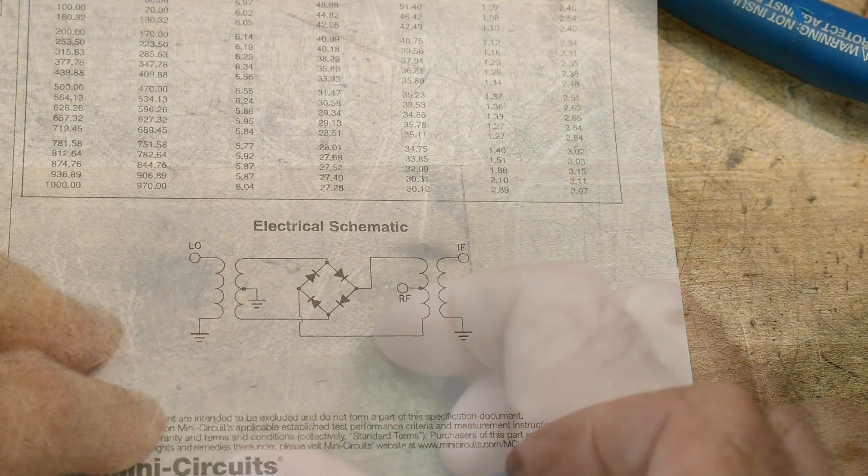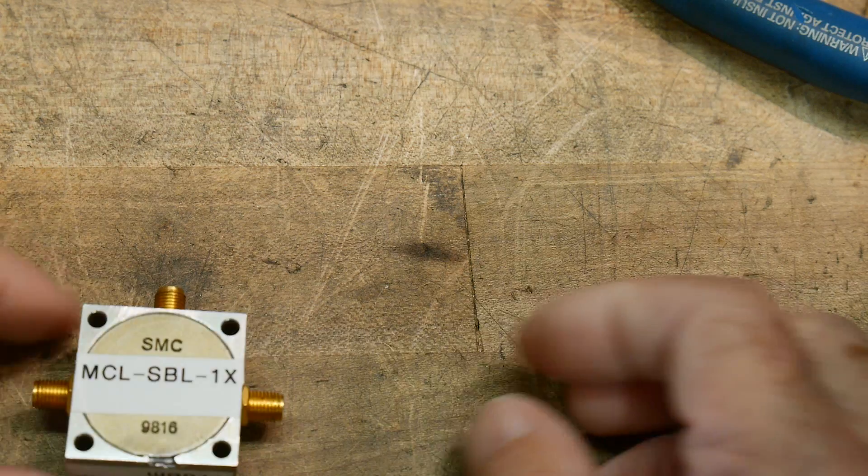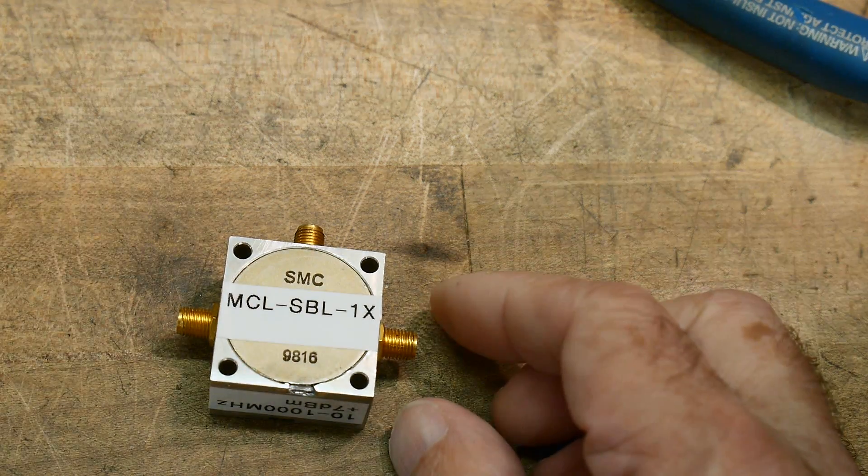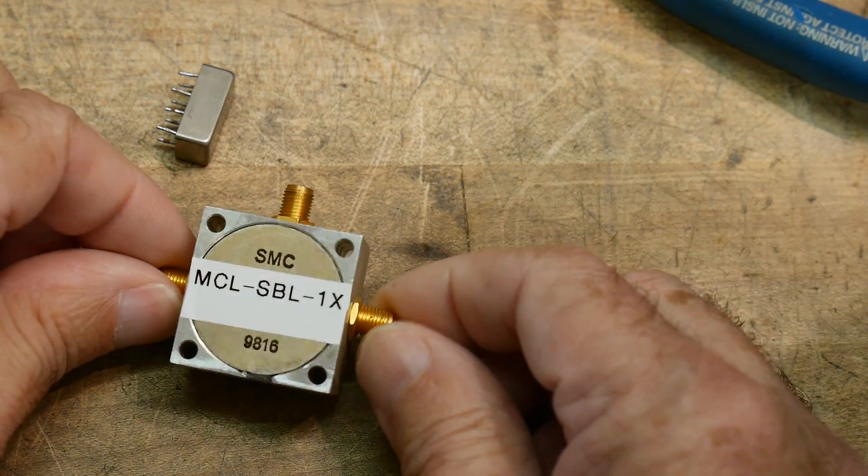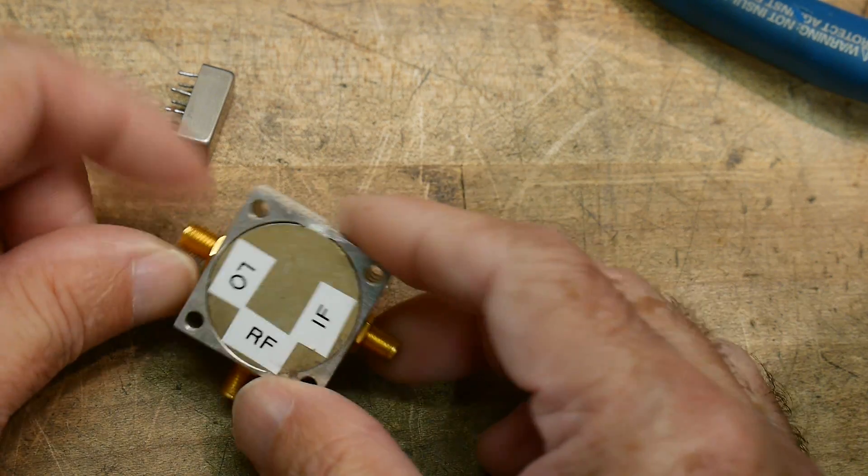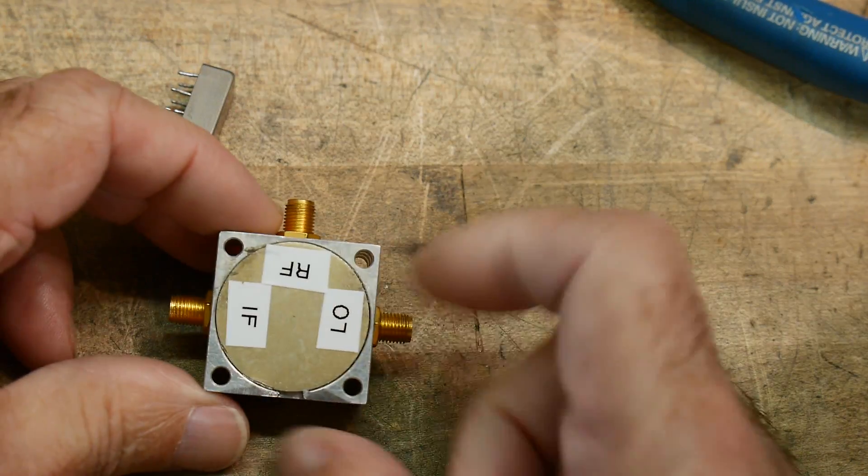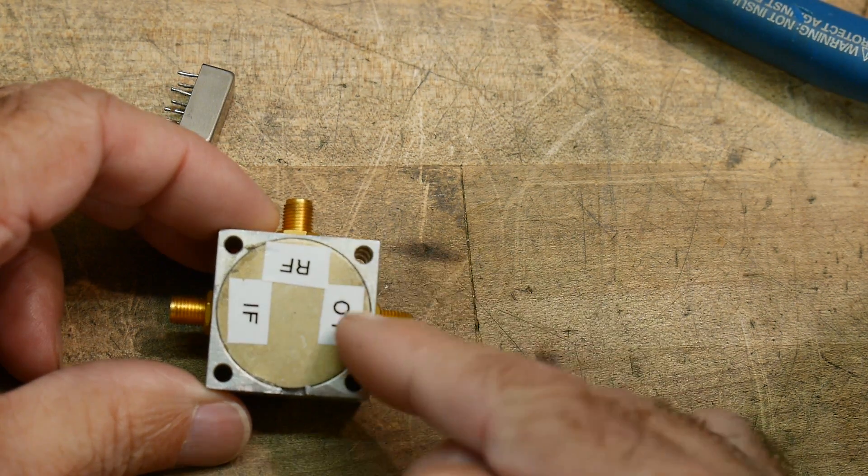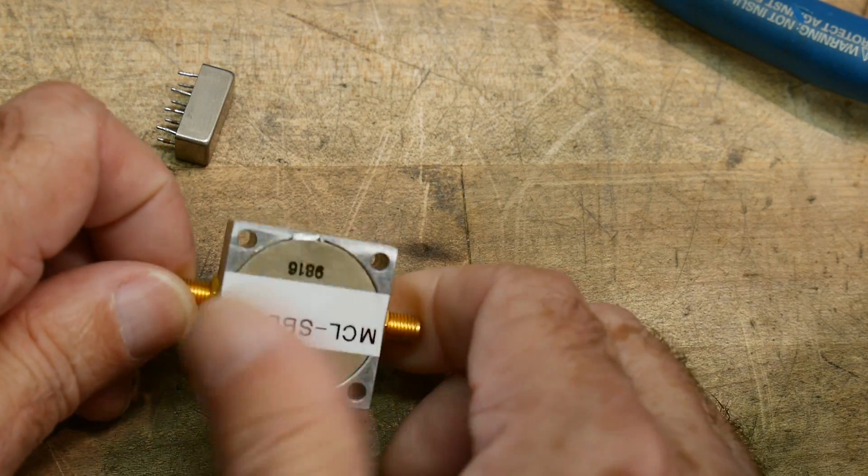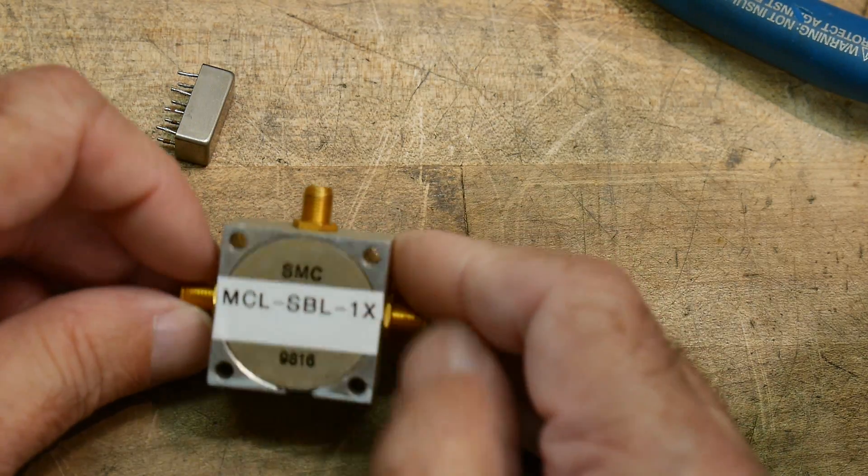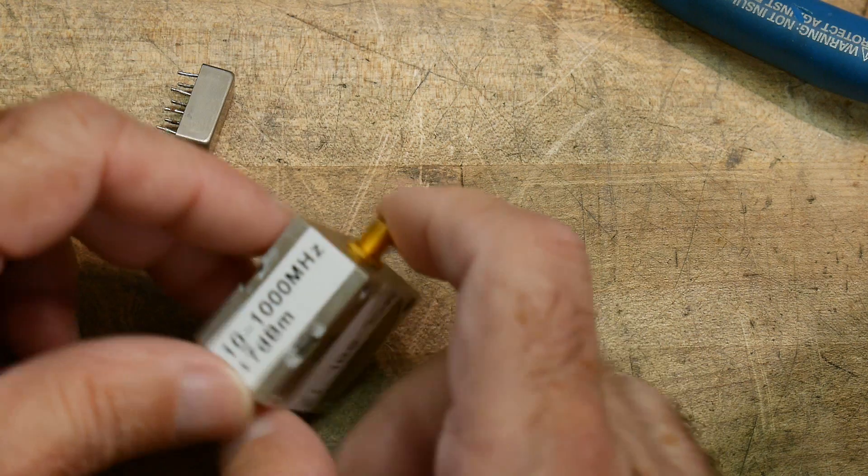So I took one of these mixers and put it inside one of my little cases here. And so here are the inputs: the RF and the LO get mixed together and they go out to the IF. And that's the part number of the Mini Circuits.